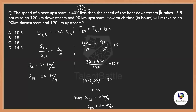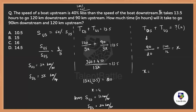Now for the required question: how much time in hours will it take to go 90 kilometers downstream and 112 kilometers upstream? Time equals distance divided by speed. Distance downstream is 90 divided by speed of downstream 20, plus distance upstream 120 divided by speed of upstream 12. That gives 4.5 plus 10, so the answer is 14.5 hours.